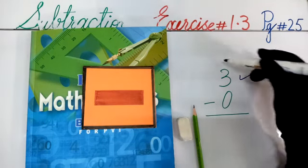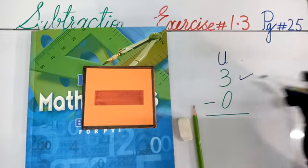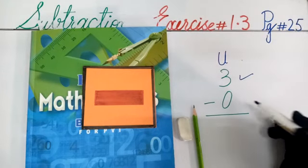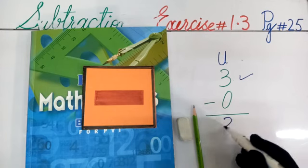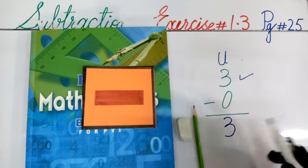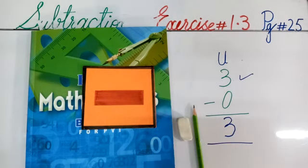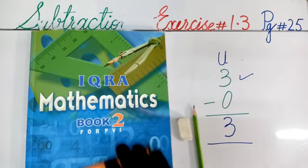Now, any number here is three, and its place value is unit. If I have three, I have zero. Whenever I minus, that is the answer. That will be the same. So, three. Right girls? I hope that you will understand this.